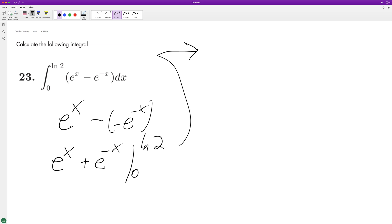So plugging this in, we get e raised to the natural log of 2 plus e raised to the negative natural log of 2, and then minus e raised to 0 plus e raised to negative 0.